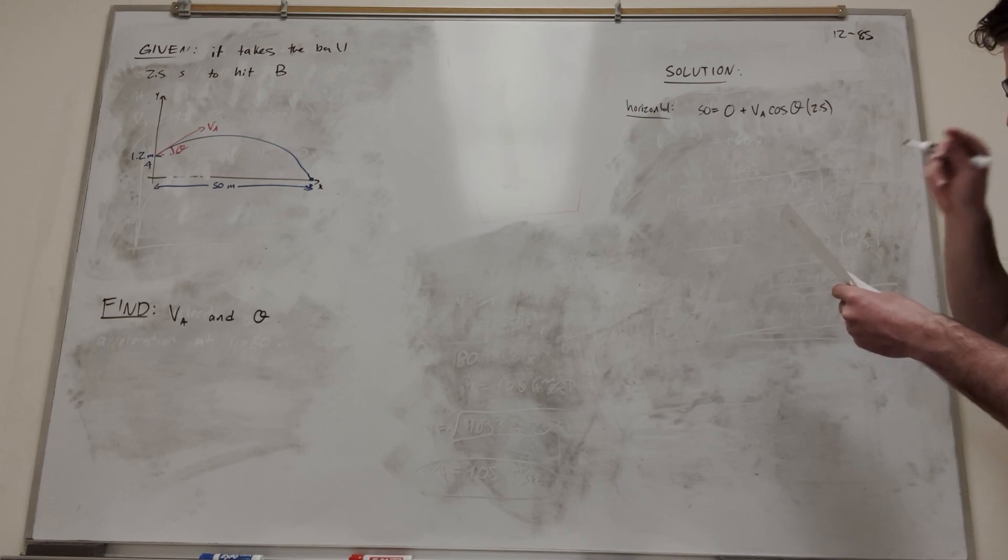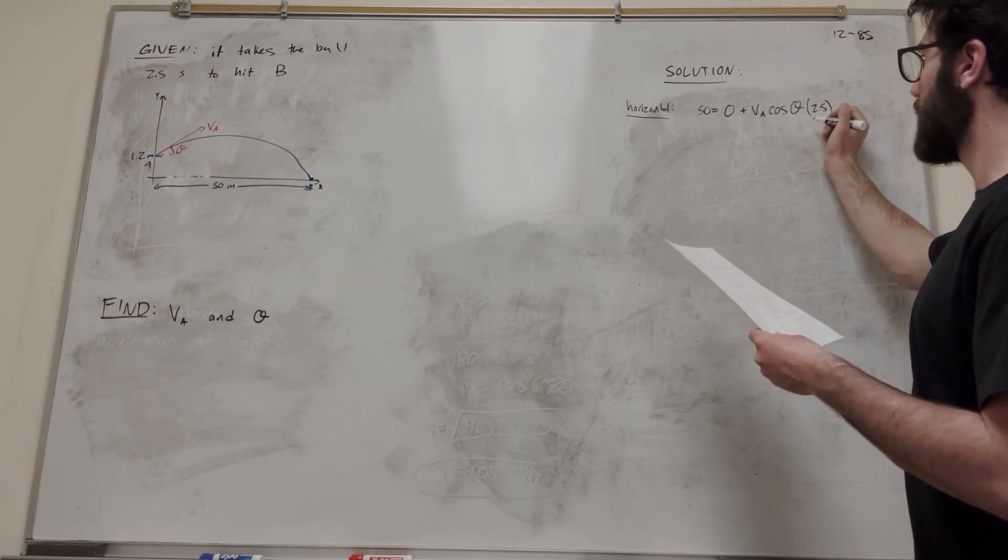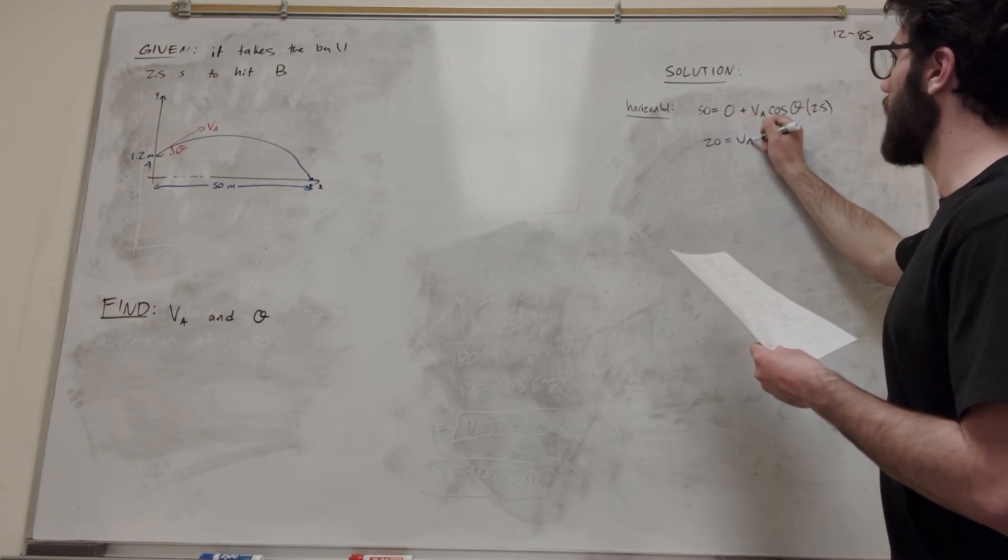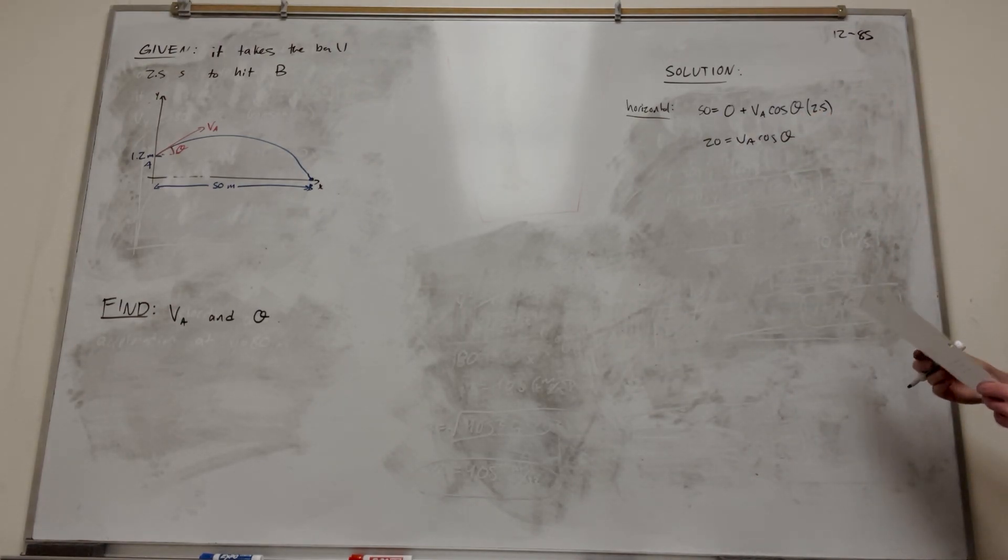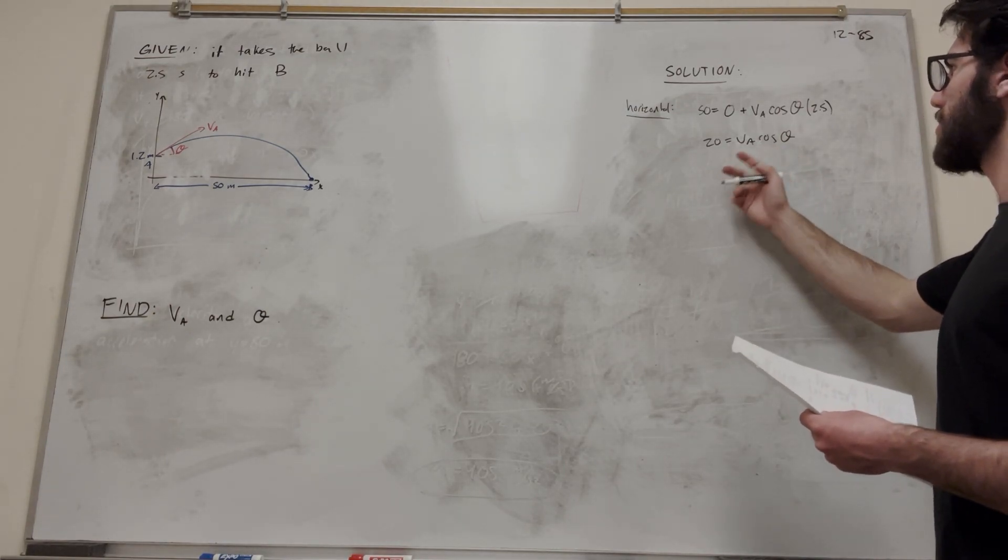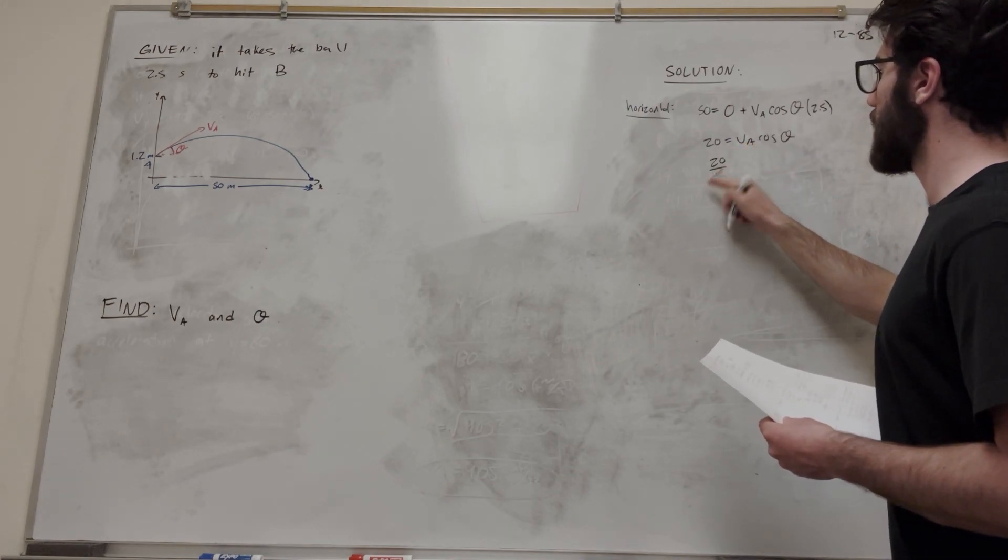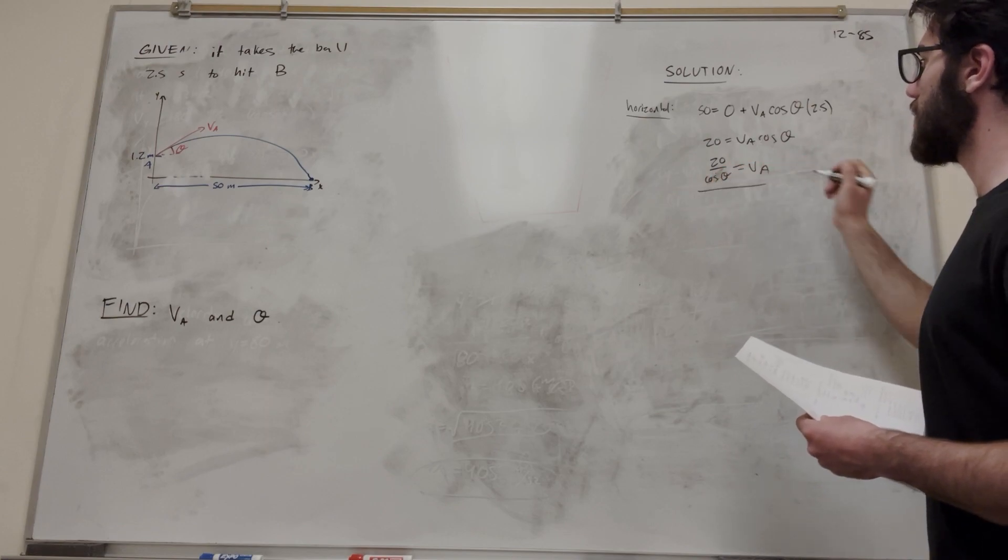So let's go ahead and divide it by 2.5. All right, so we're going to get that to be 20 on this side, right? So 20 is equal to VA cosine of theta. And how about we start by solving for cosine of theta? So let's start by solving for theta. So let's go ahead and move the VA to the other side to get 20 over cosine of theta is equal to VA.